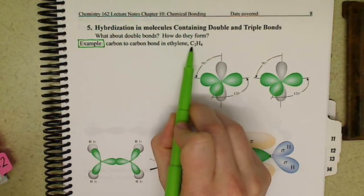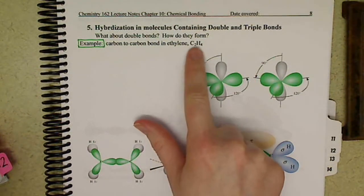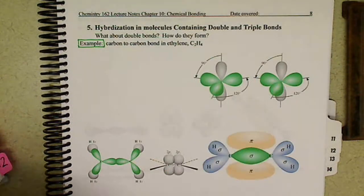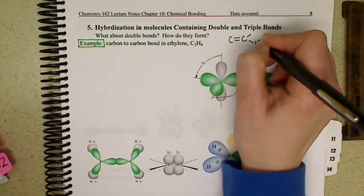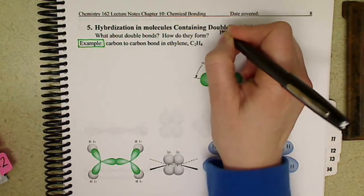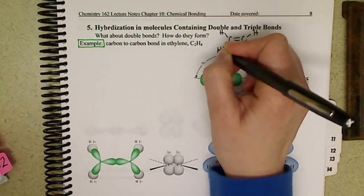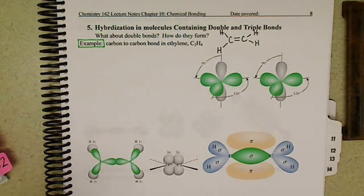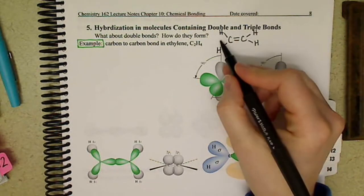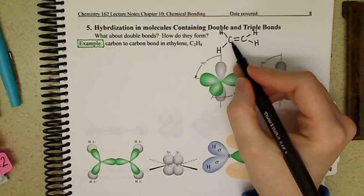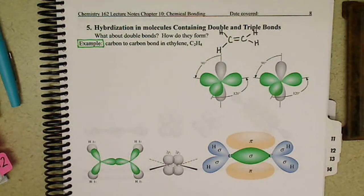We want to look at the bond in ethylene, C2H4. We draw out our Lewis structure — we have a double bond between the carbons and then single bonds to our four hydrogens. To look at our bonding, let's first start with the hybridization and then move into how the double bond forms.